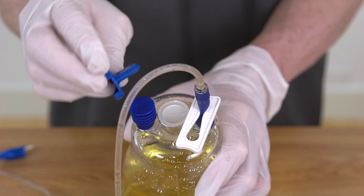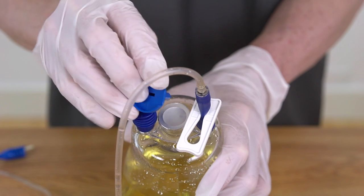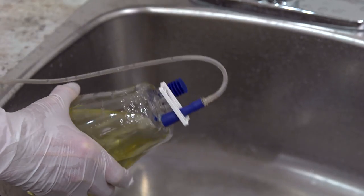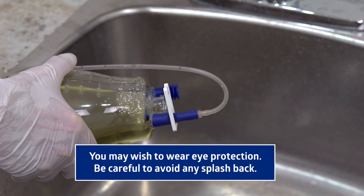Hold the bottle away from your face. Using the extended top of the cap, gently puncture the foil seal over the drain hole. You may now pour the contents into a toilet or drain if your practice directs this disposal method. You may wish to wear eye protection. Be careful to avoid any splash back.